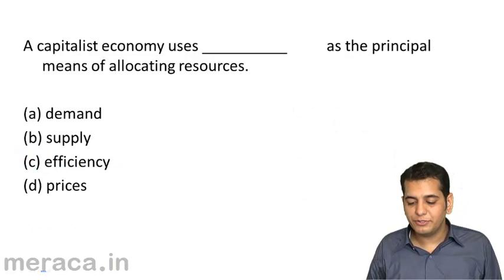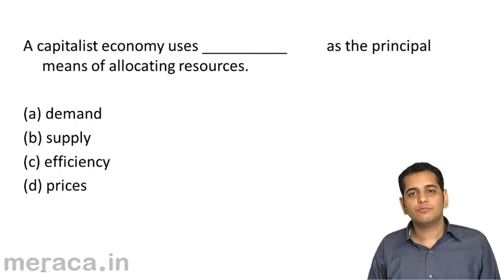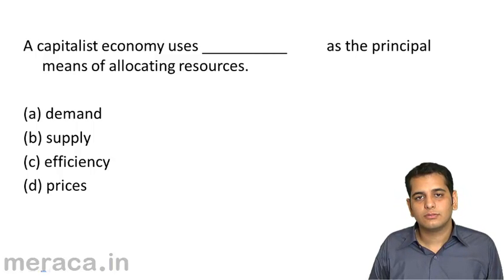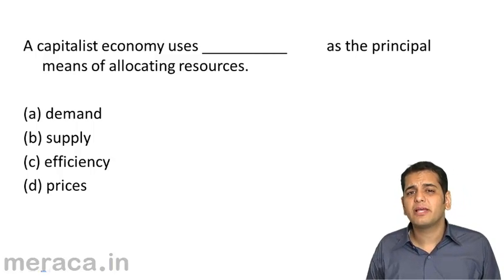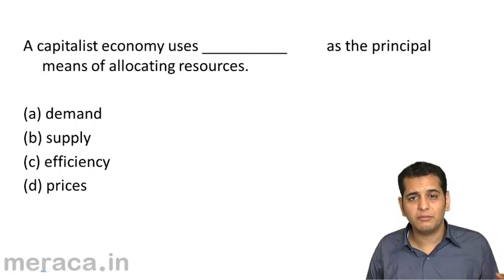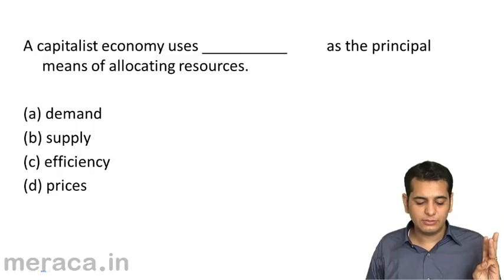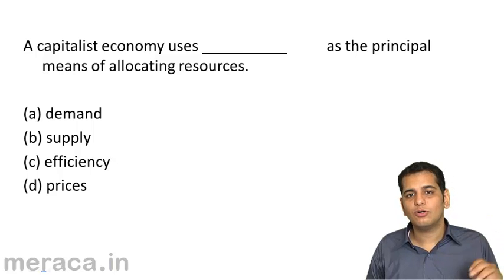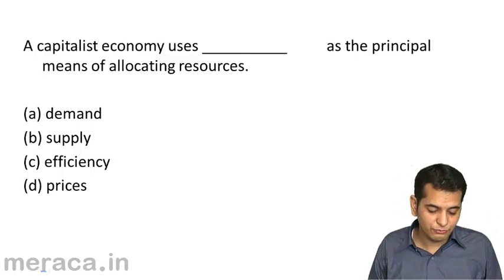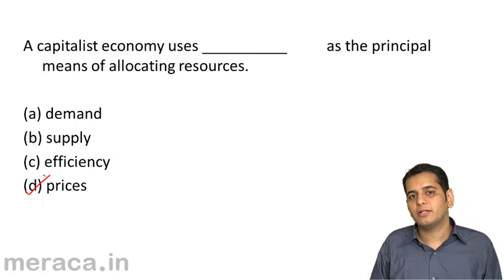A capitalist economy uses what as the principal means of allocating resources? Options: demand mechanism, supply mechanism, efficiency mechanism, or price mechanism. The answer is the price mechanism.